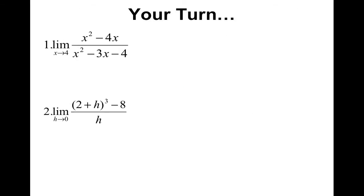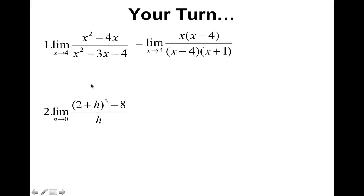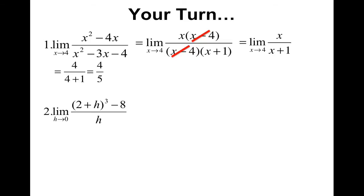Your turn — go ahead and pause the video and see if you can do problems one and two by yourself. Welcome back. On the first one, the algebra you should have noticed is some factoring. On the top, you can factor out an x, and on the bottom, you can factor out that trinomial. After factoring, you'll notice that the x minus fours cancel — bye-bye. We are left with x over x plus one. Plugging in four gives four over five. So that's the answer.